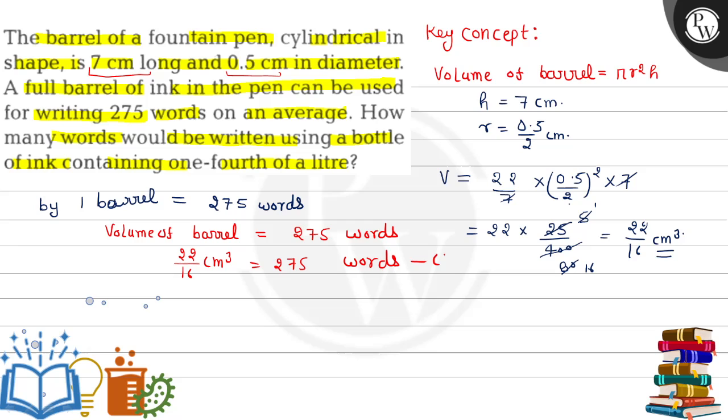Here we need to find one fourth of liter. One fourth of liter equals one by four liter. We need to change liter to centimeter cube. One liter equals one thousand centimeter cube. So one fourth of liter equals 250 centimeter cube.